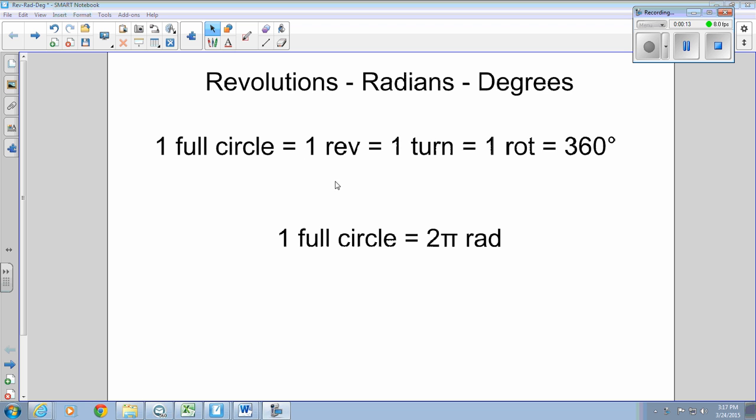So one full circle is one revolution, is one turn, one full turn, one rotation, or 360 degrees. One full circle is two pi radians, two pi radians.